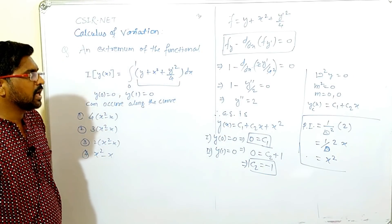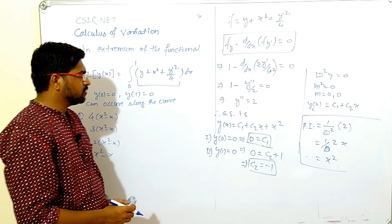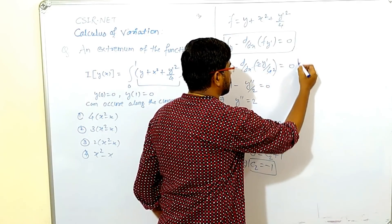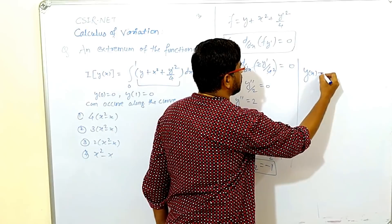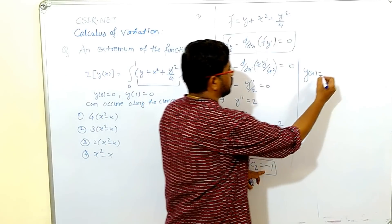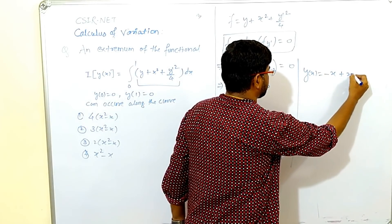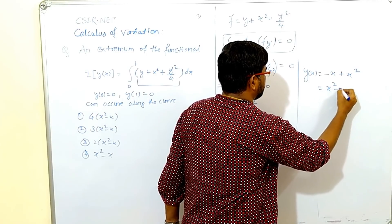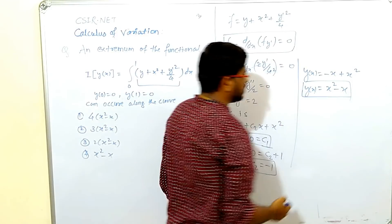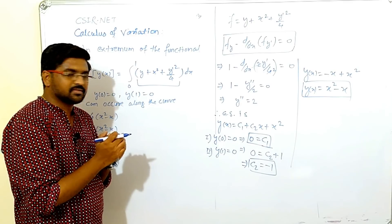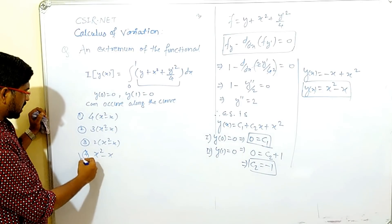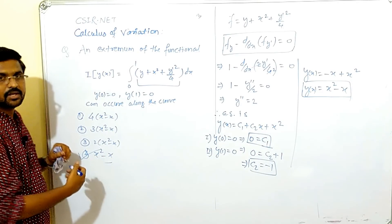c2 equals to minus 1, so the general solution is y of x equals to, now here c1 is 0 so don't need to write, c2 is minus 1 so minus x plus x square. That is x square minus x, y of x. This type may be simple to solve. What is the answer? x square minus x. Option 4 is correct.